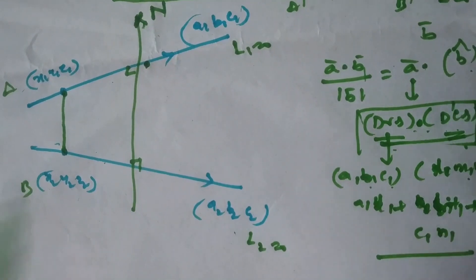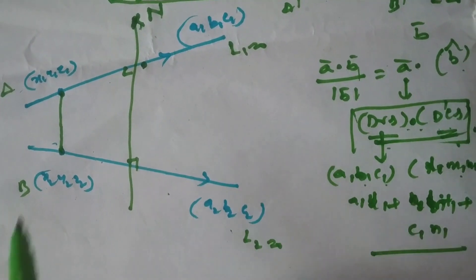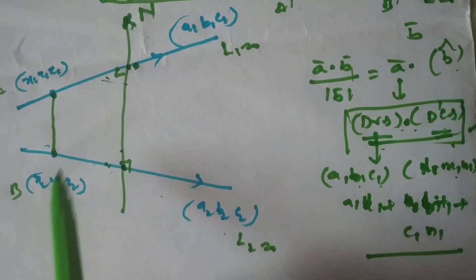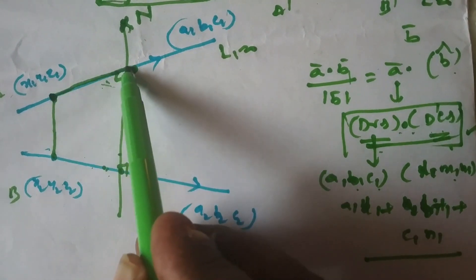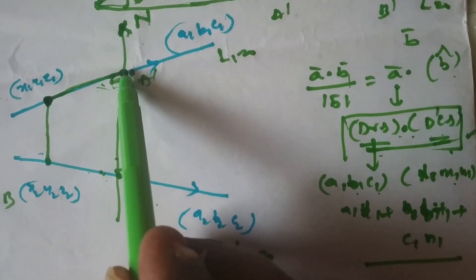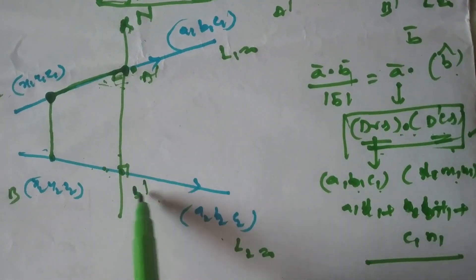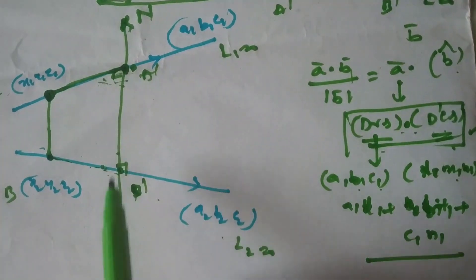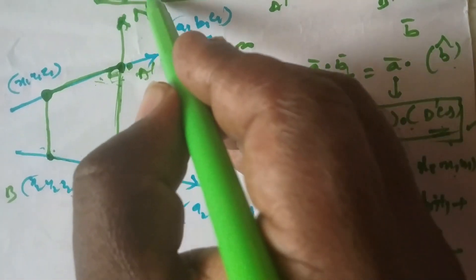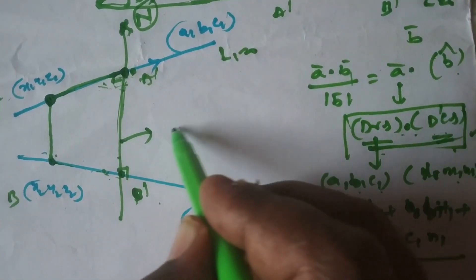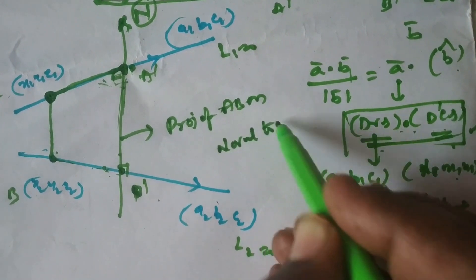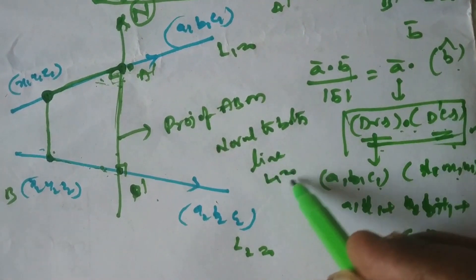Observe that the normal is perpendicular to both lines at intersection points. Here A dash is the foot of perpendicular from A to the normal line, and B dash is the foot of perpendicular from B to the normal line. Therefore this segment A dash B dash is nothing but the projection of AB on the normal to both lines L1 = 0 and L2 = 0.